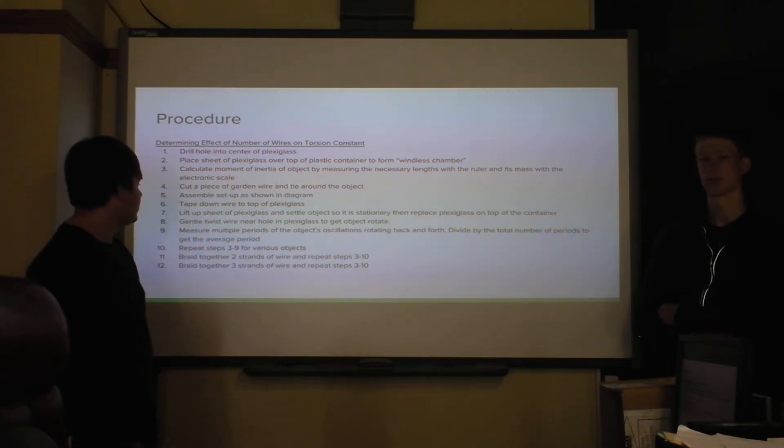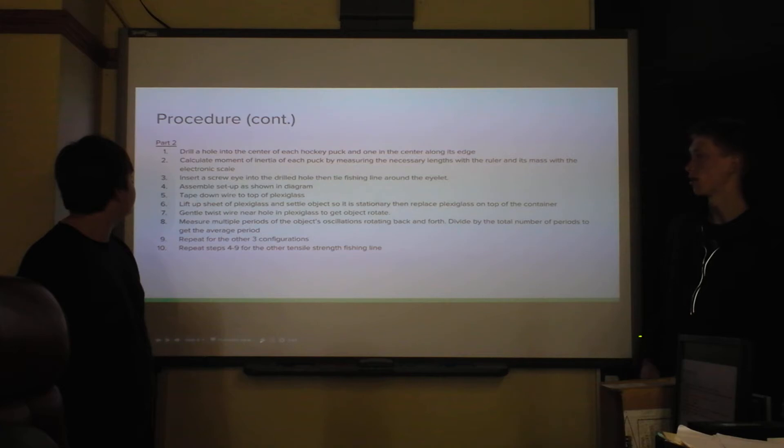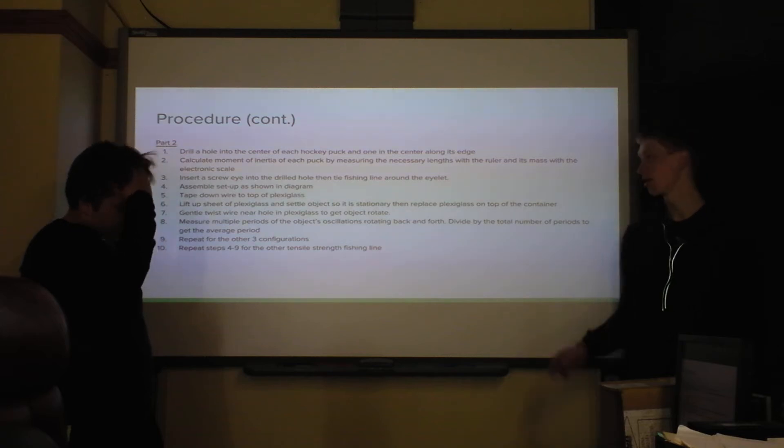Then we'd put a piece of garden wire around the object or fasten it to the object. Then we would gently twist the wires to get the moment of the object starting with its oscillations. And then we'd measure multiple periods of object, and then divide by the number of periods to get the average period. And then we'd just repeat for different... And then we had the same procedure for the other part. This is just for the fishing line instead of the gardening wire.